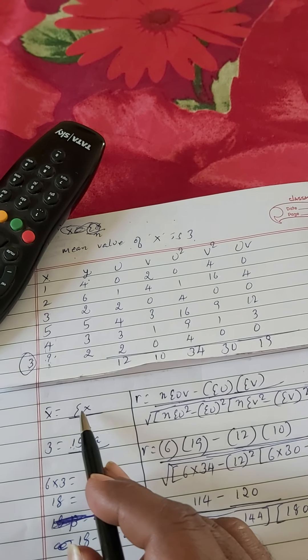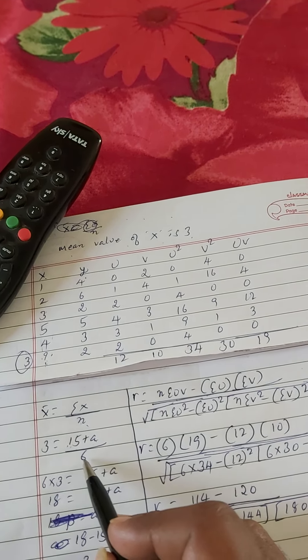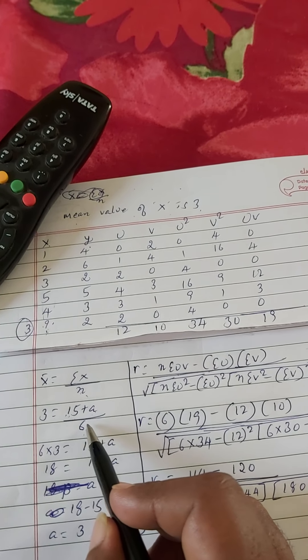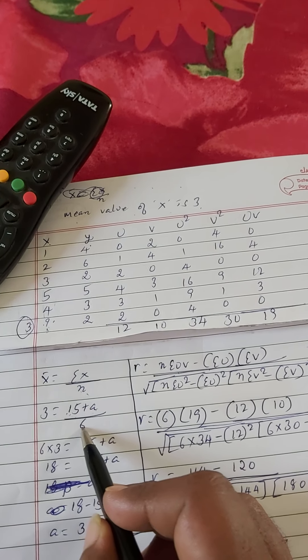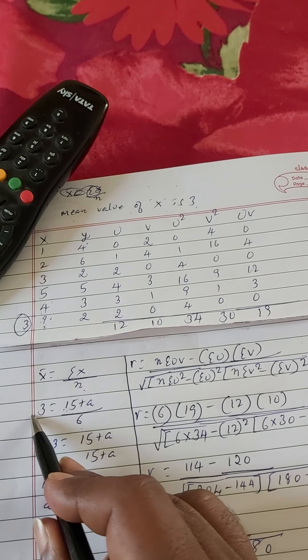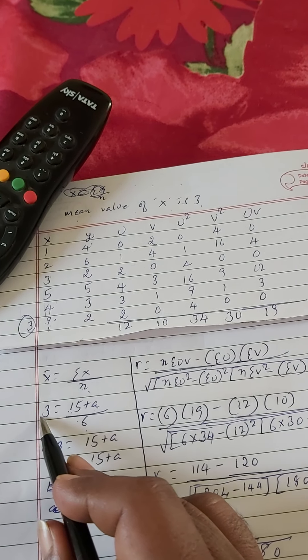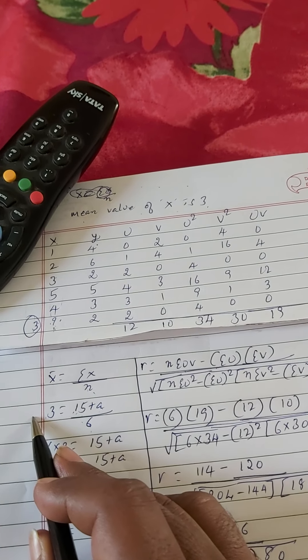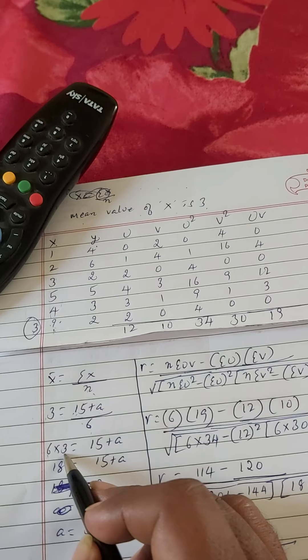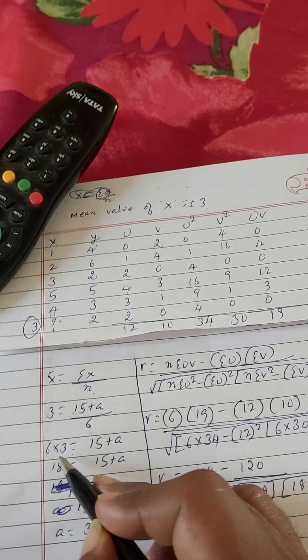Dear students, let us solve a problem on correlation. It's a different problem than you have solved previously. See, x is given, y is given, but in case of x there is one value missing. This is 3, but in the problem they give a question mark, that means this one is missing. So we need to identify this number.